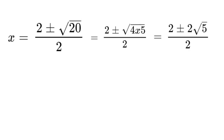So, that's our most simplified version. Now, let's go one more step further. So, now that we have a 2 over 2, we can cancel all those out, which leaves us with x is equal to 1 plus or minus the square root of 5.